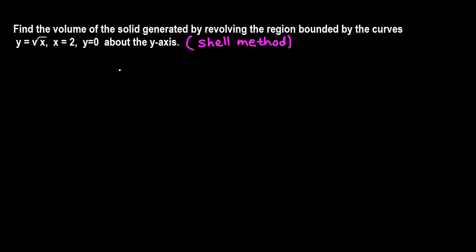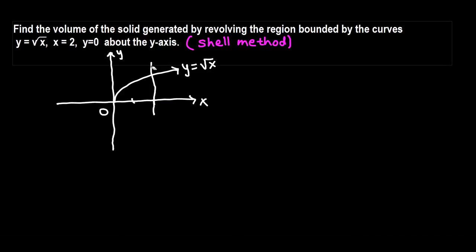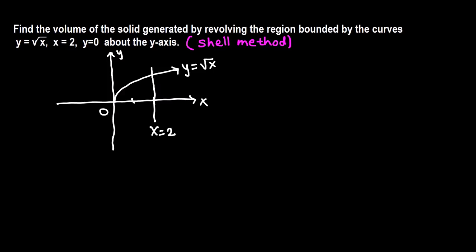Let's graph these three curves. We have y equals root x, x equals 2 which is a vertical line at x equals 2, and y equals 0 which is the x-axis.